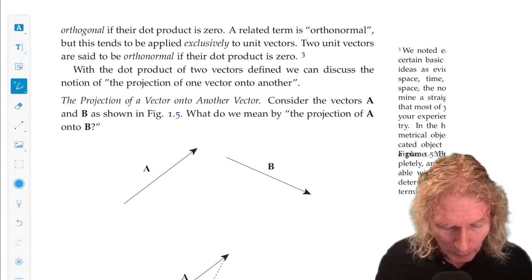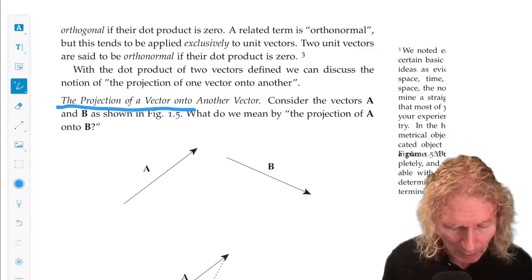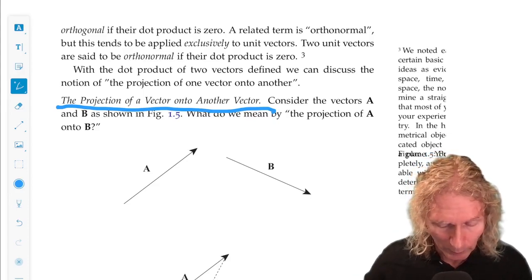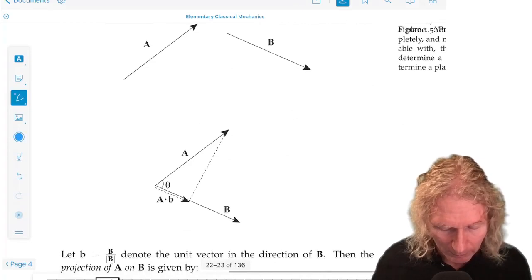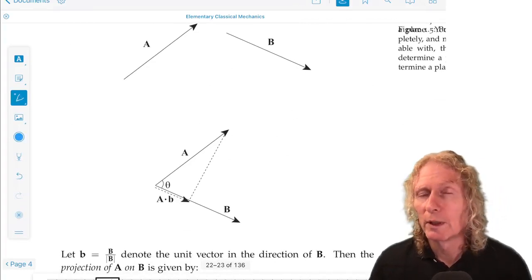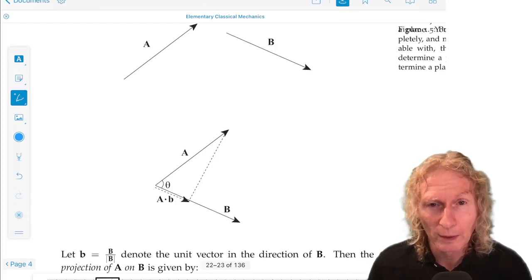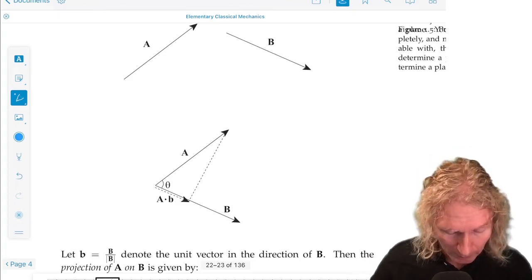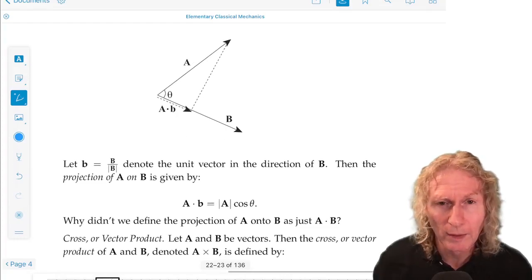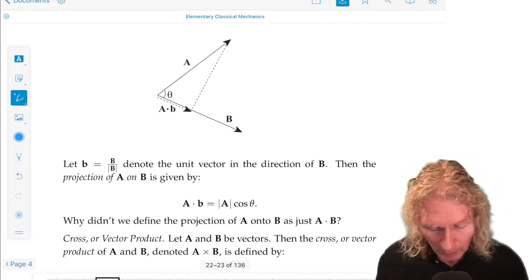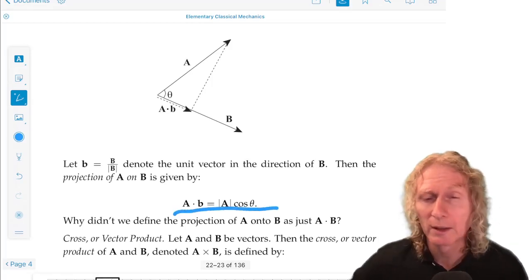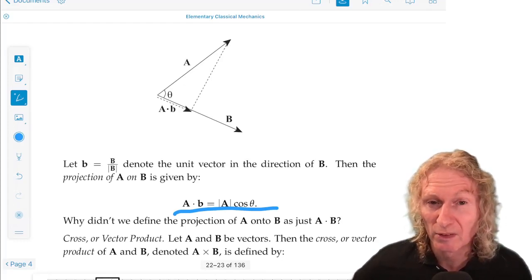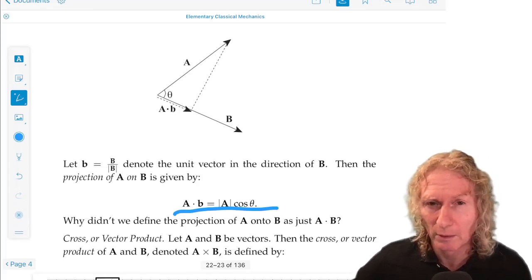With the dot product in hand, we can talk about the projection of one vector onto another. In particular, let's consider a and b as before, and we want to look at the projection of a onto b. Here's a little diagram below. So we do this by considering the unit vector associated with b, so that would be b divided by the magnitude of b, lowercase b. And the projection of a onto b is a dot lowercase b, the unit vector associated with b. And that would just be the magnitude of a, because magnitude of lowercase b is 1, times the cosine of the angle between them.